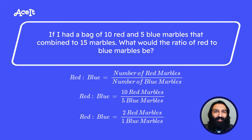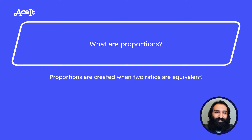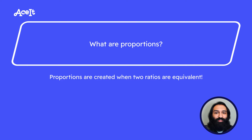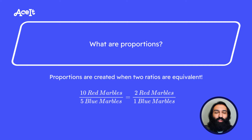Next, we're going to talk about proportions. Proportions are created when two ratios are equivalent. By equivalent, I mean they represent the same value after being reduced to simplest form. We can use the previous problem as an example.